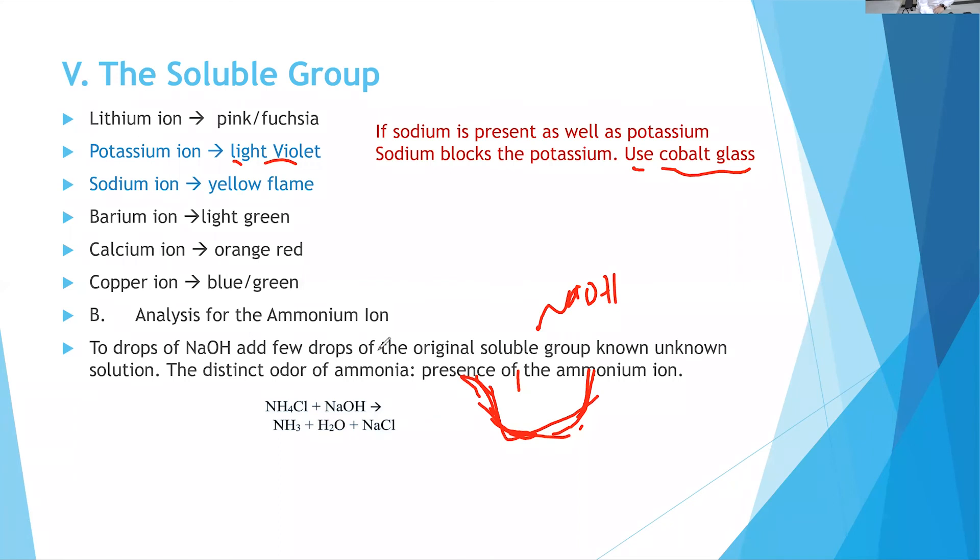Now, if the sample has ammonium ion, NH4+, that is the ammonium ion. If the sample contains ammonium ion, it's going to react with sodium hydroxide and it will generate ammonia, water, and NaCl.